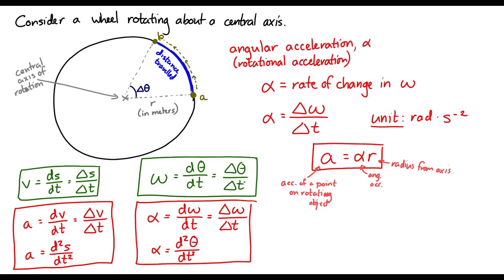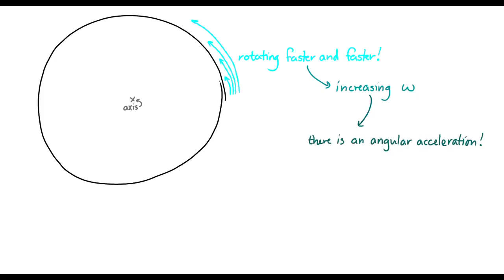So for example, imagine we have some kind of wheel like this, and it's spinning faster and faster and faster. Well, that means that the angular speed is increasing, and there has to be an angular acceleration. There's a rate of change in the angular speed.